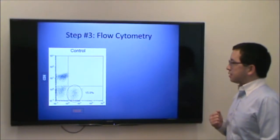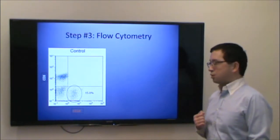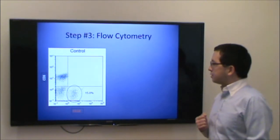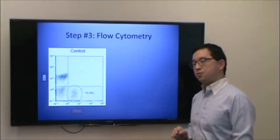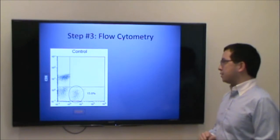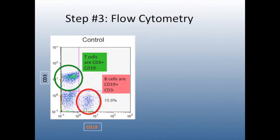This is an example of the data collected when the sample goes through the flow cytometer — a dot plot in which each single dot represents an individual cell detected. In this figure, CD19 on the x-axis identifies B cells, and CD3 on the y-axis identifies T cells. The CD3-positive cell population are your T cells, and the CD19-positive cell population are your B cells.